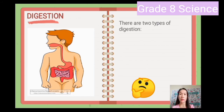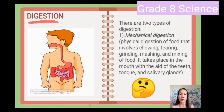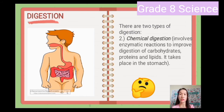There are two types of digestion. The first one is mechanical digestion — it is the physical digestion of food that involves chewing, tearing, grinding, mashing, and mixing of food. It takes place in the mouth with the aid of the teeth, tongue, and saliva glands. The second type is chemical digestion, which involves enzymatic reactions to improve digestion of carbohydrates, proteins, and lipids. It takes place in the stomach.